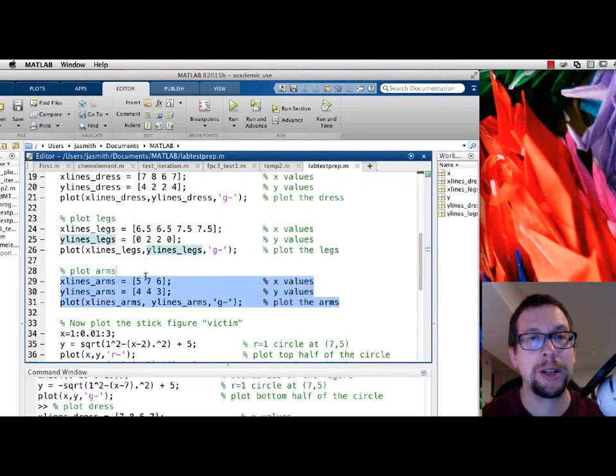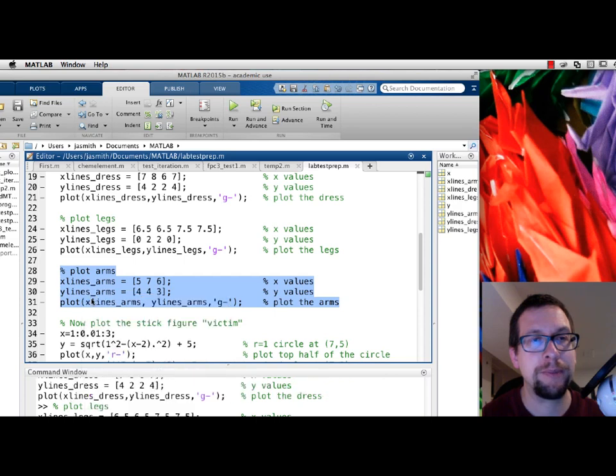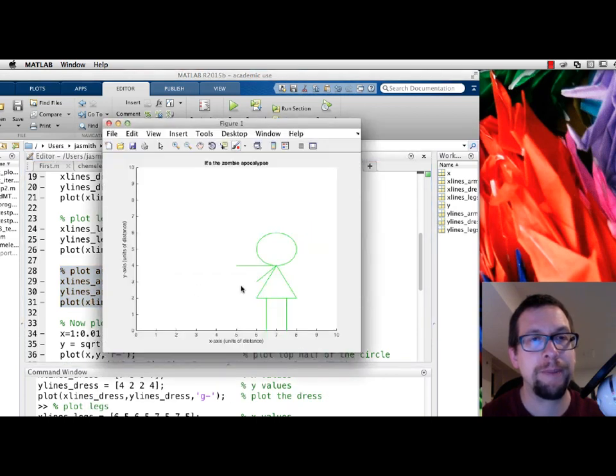Now we're going to plot the zombie's arms. She's reaching out for her victim. So we have three points, 5, 7, and 6, 4, 4, and 3. So 5 and 4, 7 and 4, 6 and 3 are the three coordinate pairs. And we go like this. We go evaluate selection, switch back over to the figure, and there you have it. The zombie is reaching out with two arms.